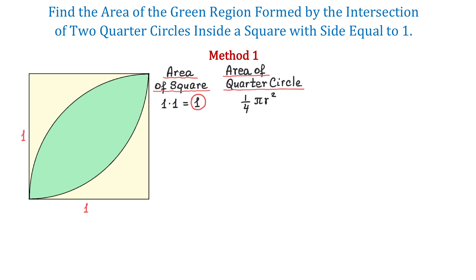From the figure, we see that the radius of this quarter circle is 1, and if we replace it in the formula, we will get 1/4 multiplied by π times 1 squared, which makes π over 4.